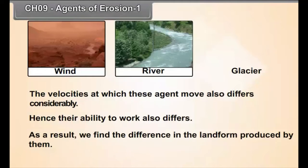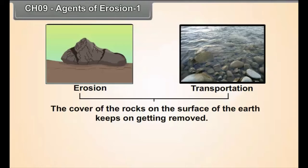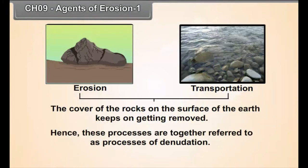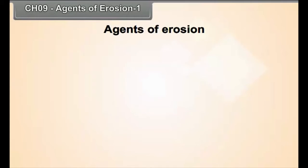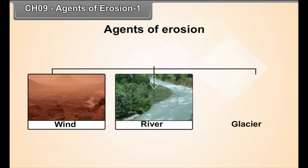As a result, we find differences in the landforms produced by them. Through erosion and transportation, the cover of the rocks on the surface of the earth keeps on getting removed. Hence, these processes are together referred to as processes of denudation. In this chapter, we shall study the work of river, wind and glaciers.